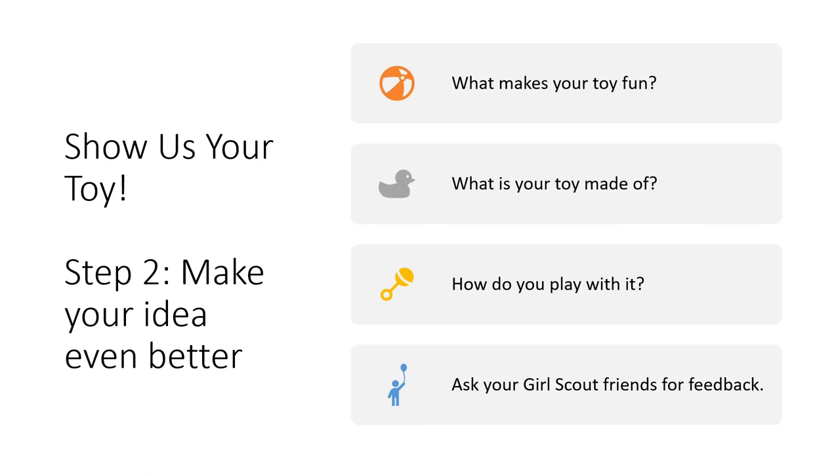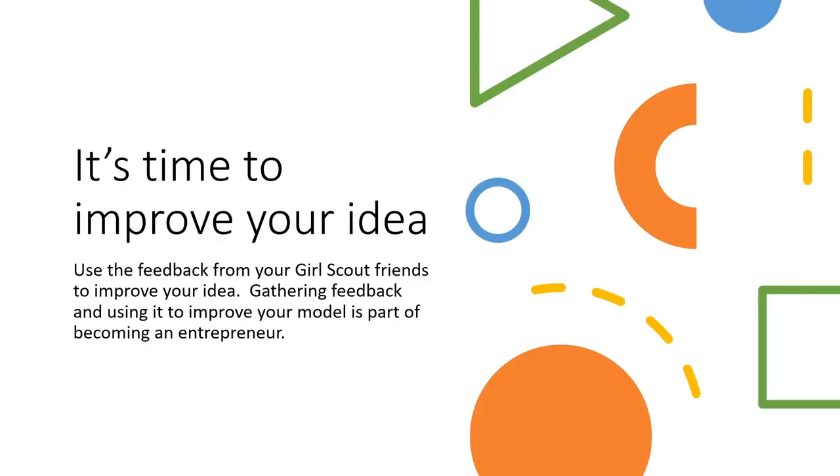Onto step two. We're going to make your idea even better. Fellow Girl Scouts will ask you questions like this: What makes your toy fun? What is your toy made out of? How do you play with it? Ask your fellow Girl Scouts for feedback. It's time to improve your idea. Using the feedback you gathered from your fellow Girl Scouts, you can improve your idea. Gathering feedback is an important part to improve your model and becoming an entrepreneur.